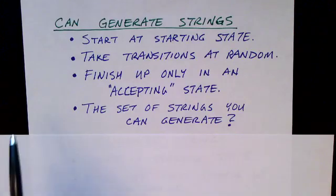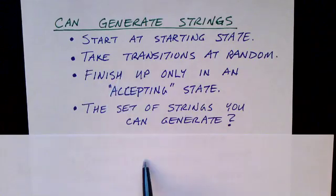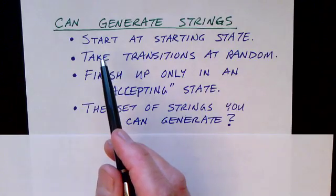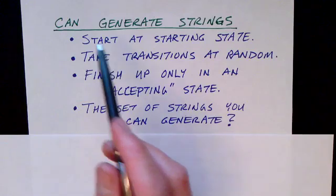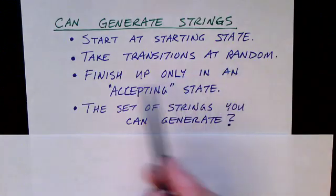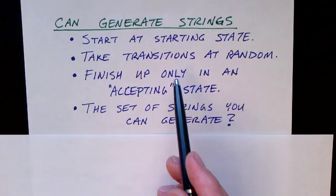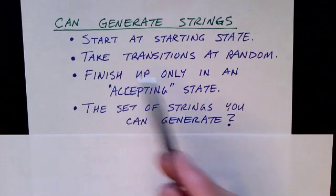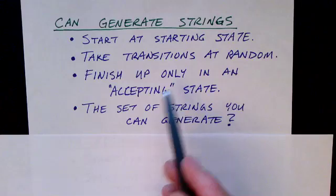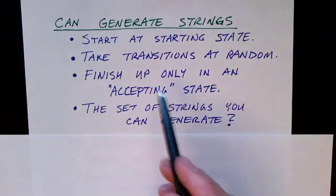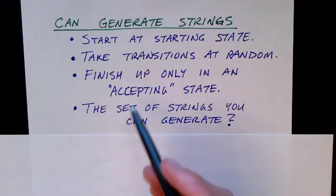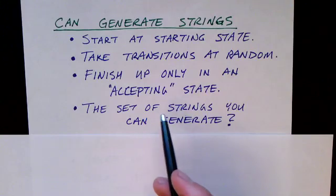Finite state machines can be used in two ways. One way is that they can be used to generate strings. Given a finite state machine, you start at the initial state and then take transitions, perhaps at random. As you traverse each edge, there's a symbol labeling that edge, and you use that symbol. Finally, you end up in an accepting state and then you can stop — you can't stop unless you're in an accepting state. As you go through the directed graph following edges, you string all those symbols together to create a string of symbols, and the resulting string is generated by that finite state machine.